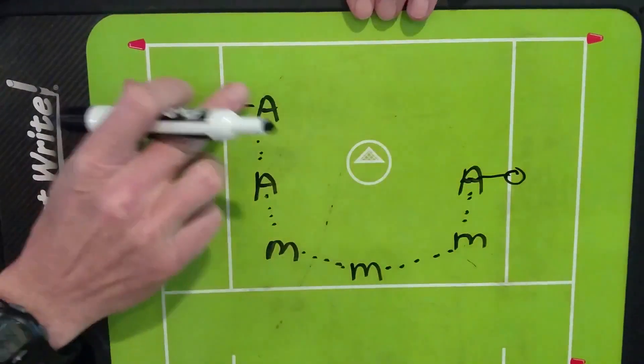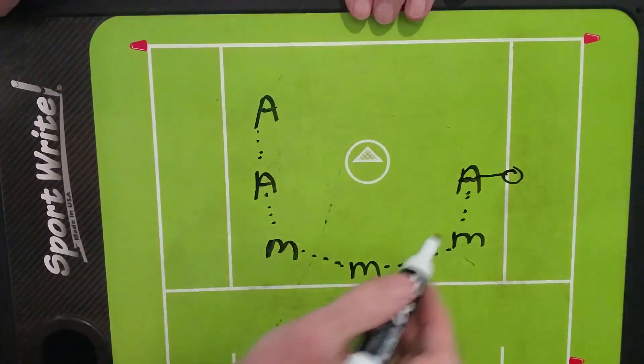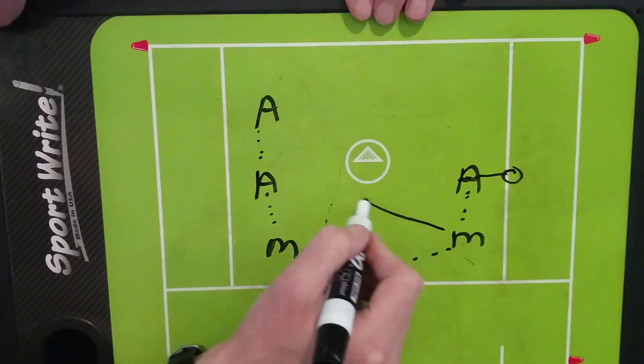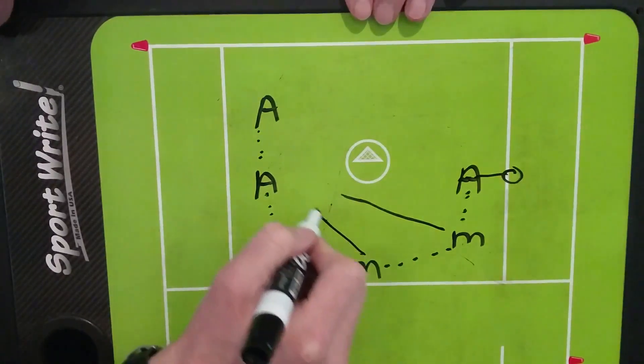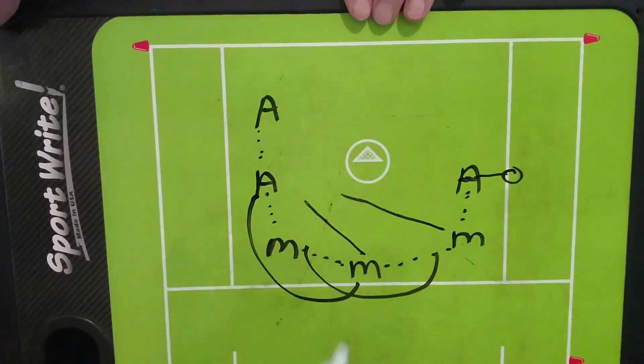Once we have the ball in that player's stick, that's when all the movement starts. This player cuts through. This player cuts through. This player fills in here. This player fills in here.